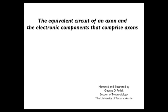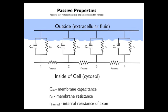In this movie, I'm going to discuss the equivalent circuit of an axon and the electronic components that comprise axons. This is a drawing of the electronic components that comprise the axon. The outside is indicated in blue — that's the extracellular fluid — and the inside of the axon is indicated by white. There are four different blocks, and each represents the building block of an axon and the electronic components that comprise those building blocks.